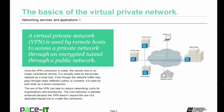A virtual private network, or VPN, is used by remote hosts to access a private network through an encrypted tunnel through a public network. Once the VPN connection is made, the remote host is no longer considered remote — it's actually seen by the private network as being a local host. Even though the network traffic may pass through many different routes or systems, it's seen by both ends as being a direct connection. The use of a VPN can help reduce networking costs for organizations, because a VPN doesn't require the use of a dedicated leased line to create that direct connection.